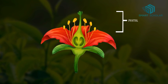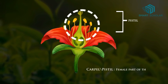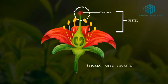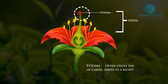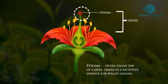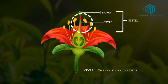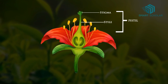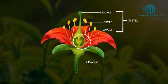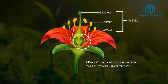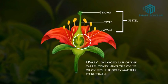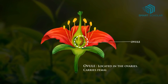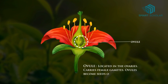Carpel or pistil: the female part of the flower, consisting of the stigma, style, and ovary. Stigma: the often sticky top of the carpel, serves as a receptive surface for pollen grains. Style: the stalk of a carpel between the stigma and the ovary, through which the pollen tube grows. Ovary: the enlarged base of the carpel containing the ovule or ovules; the ovary matures to become a fruit. Ovule: located in the ovaries, carries female gametes; ovules become seeds on fertilization.